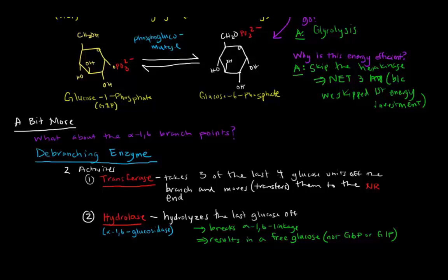And then transfers them over to the non-reducing end. So once the three of the four, when they're attached to the non-reducing end, then they can be further taken off by glycogen phosphorylase. When there's only one more glucose left on the chain connected via the alpha-1,6 linkage, we have this hydrolase enzyme, and that basically just hydrolyzes that last glucose off of the linkage. So it breaks the alpha-1,6 linkage, and it results in a free glucose. And this glucose is not G6P or G1P, it's just a free glucose. So that's just a bit more in case you were interested.